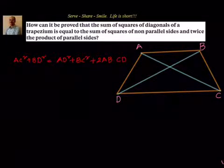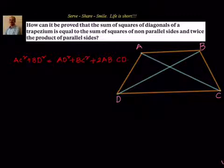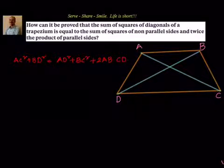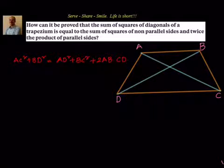Let us say that ABCD is a trapezium with diagonals AC and BD. Then we have to prove that AC² + BD² = AD² + BC² + 2 × AB × CD. That is, the sum of squares of the diagonals equals the sum of squares of the non-parallel sides plus twice the product of the parallel sides AB and CD.